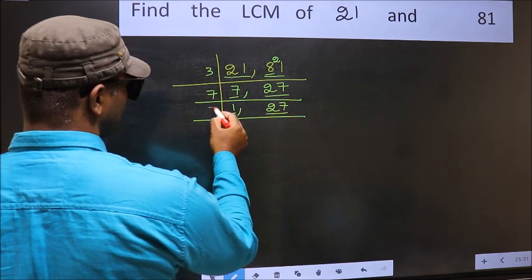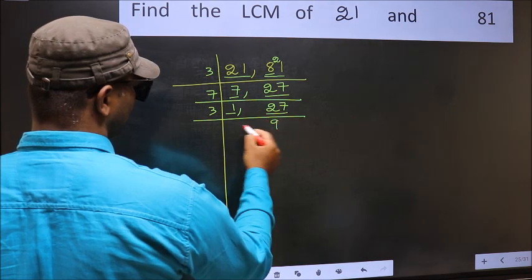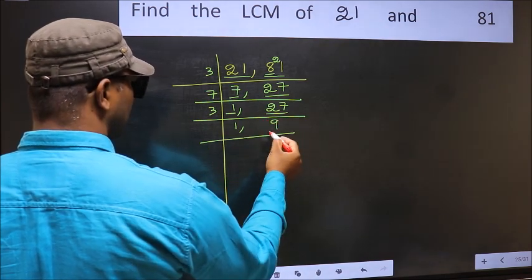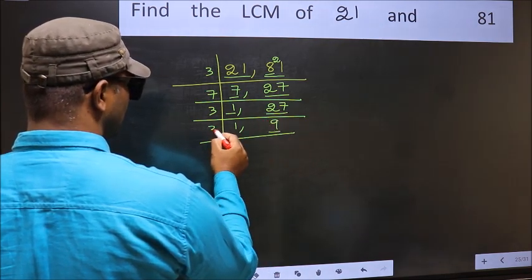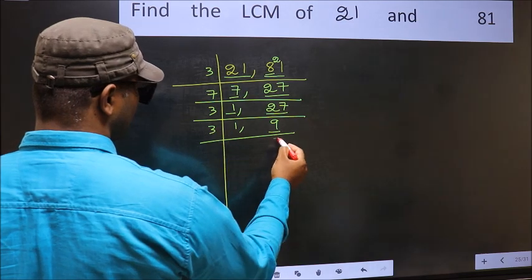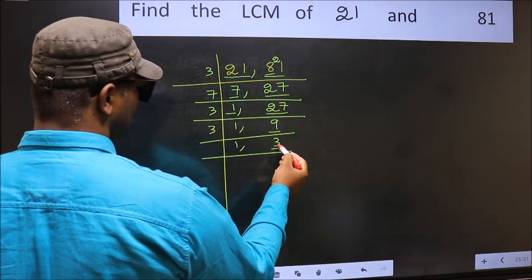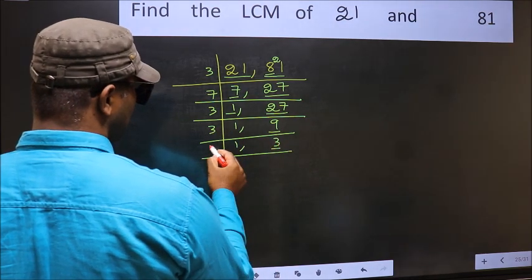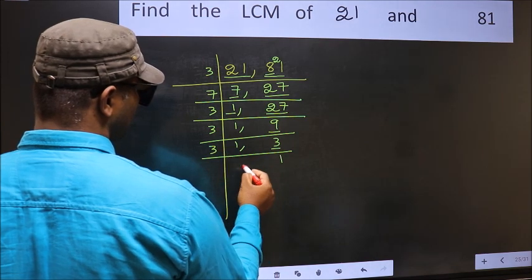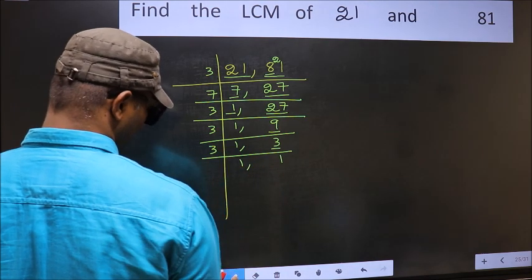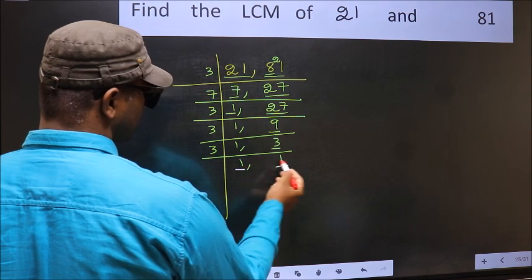Now we got 1 here, so focus on the next number, 27. 27 is 3 nines — 3 times 9 equals 27. Now here we have 9, and 9 is 3 threes — 3 times 3 equals 9. Now we have 3, which is a prime number, so 3 times 1 is 3. We got 1 in both places.